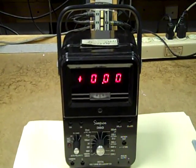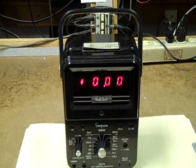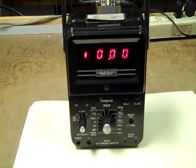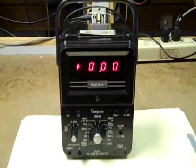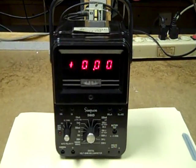This is a Simpson 360 Series 2 digital multimeter. It's totally manual ranging and it dates to 1975.